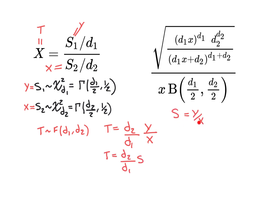We'll call the random variable Y/X by the name S, so that T equals (d2/d1) times S. S is a nice choice for a variable name since we're used to using little s as a variable. So we want to figure out how S is distributed, knowing how X and Y are individually distributed and that they are independent.